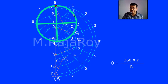This is a special case. When the diameter of the rolling circle is half of the diameter of the directing circle, then the path traced by a point on the rolling circle is a straight line.